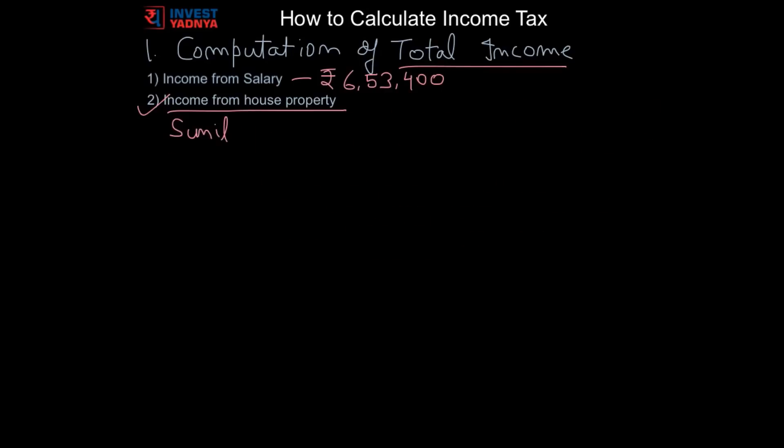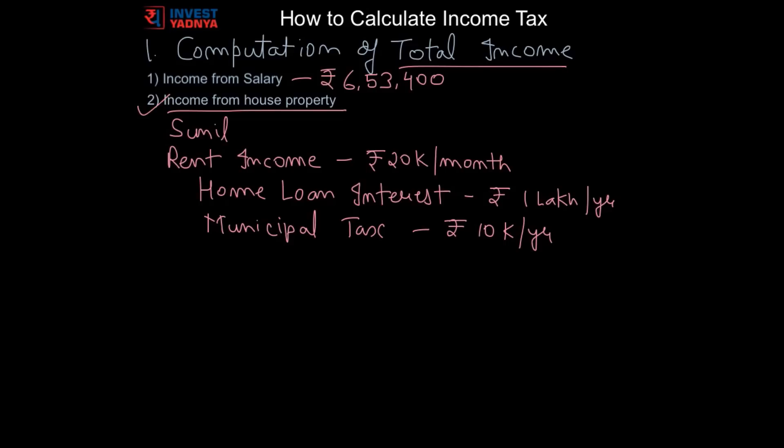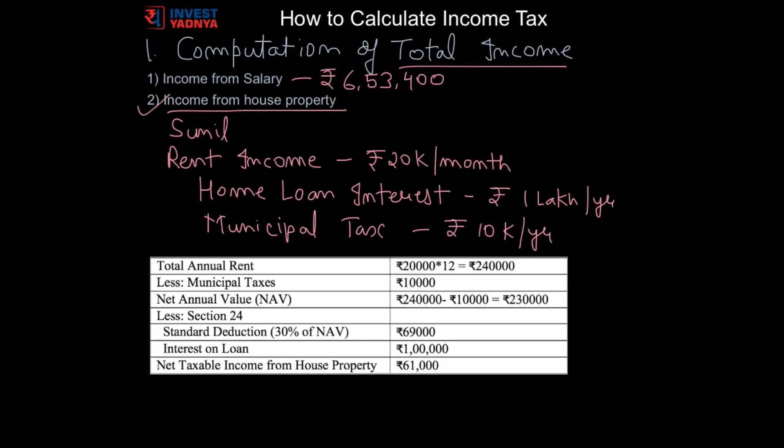Taking Sunil's example, if Sunil has one property in his name but he is living in different location and his property is earning him a rent of rupees 20,000 per month. We also assume that Sunil has taken a loan for his property and is paying annual interest of rupees 1 lakh on it and is also paying rupees 10,000 per year as municipal tax. In that case following will be the income of house property for Sunil.